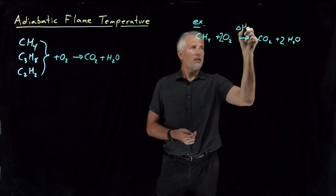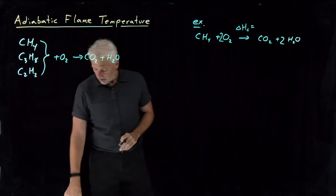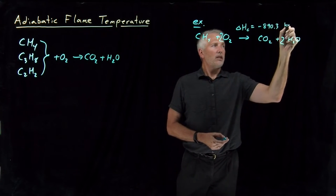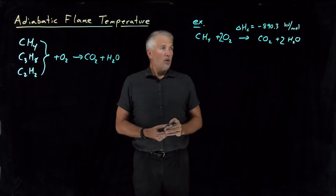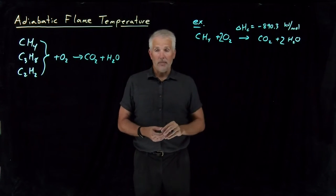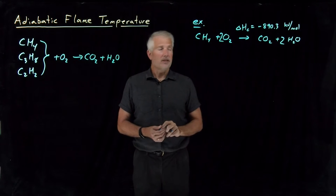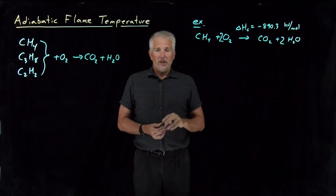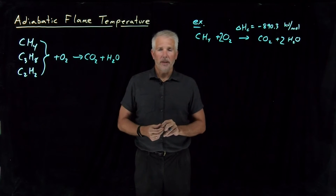So there's the balanced combustion reaction for methane. The enthalpy of combustion for methane — the enthalpy change associated with that reaction — is minus 890.3 kilojoules per mole. That's a number we can get by looking it up in a table, by calculating it from the heats of formation of products minus reactants, or by measuring the enthalpy in a calorimetry experiment. That's the enthalpy change for this combustion reaction, and together with one additional assumption, it's enough to let us calculate the temperature at which methane will burn.